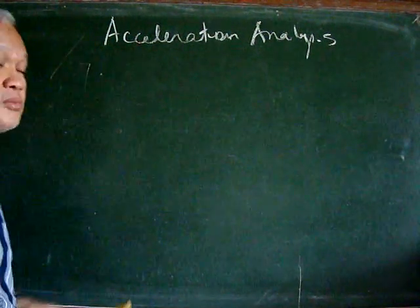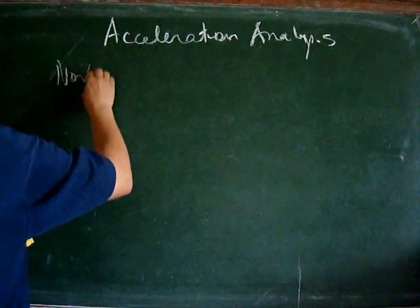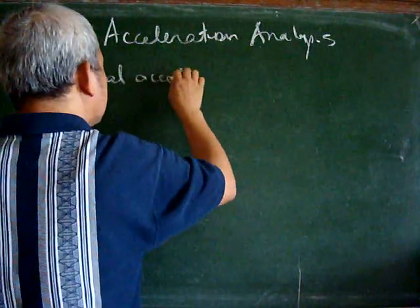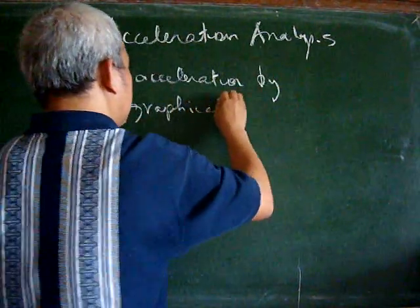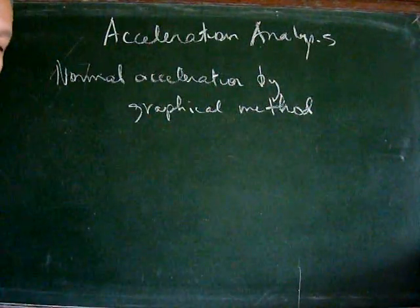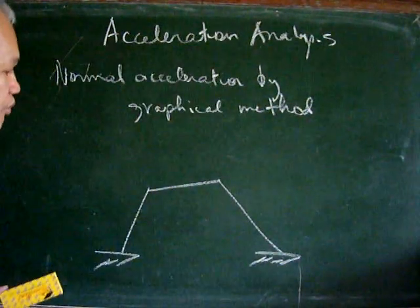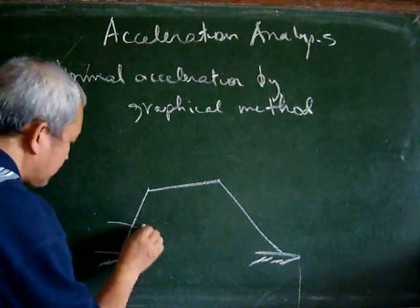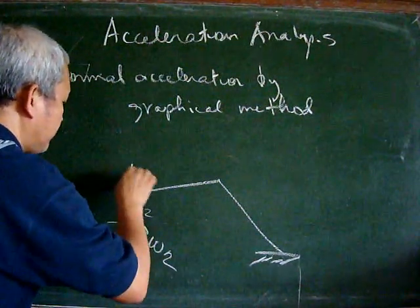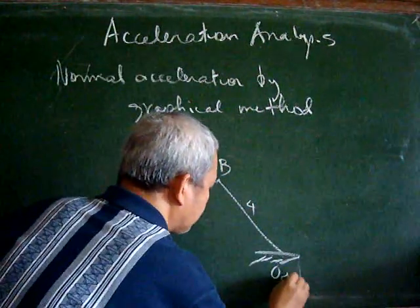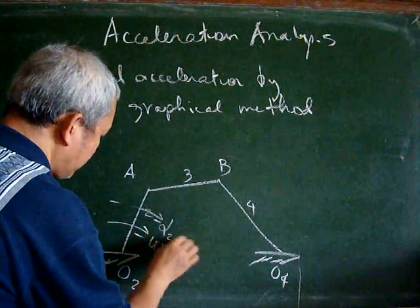We can perform acceleration analysis a little faster if we determine normal acceleration by the graphical method. Taking this as an example — a four-bar linkage where we are given alpha 2. This is body 2, this is point A, that is point B, body 3, body 4. We can assume alpha 2 equal to 0 for the time being.